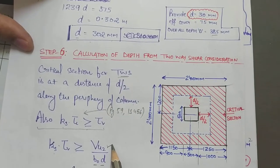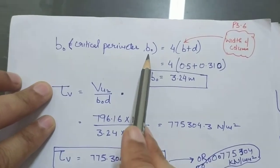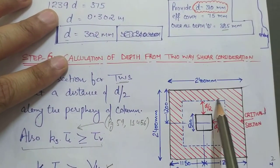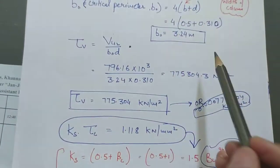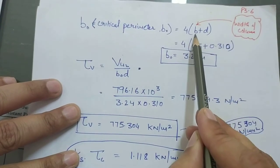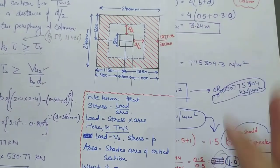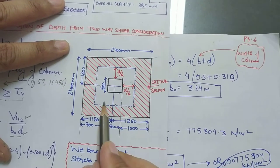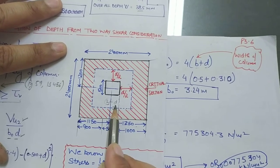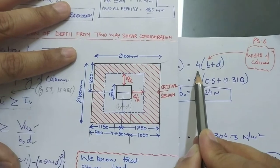Using D = 310 mm from one-way shear, we calculate B0, the critical perimeter. B0 = 4 × (column width + D) = 4 × (500 + 310) = 4 × 810 mm = 3240 mm = 3.24 m. For a square column, βC = 500/500 = 1, so Ks = 0.5 + 1 = 1.5, but capped at 1. Therefore Ks = 1.